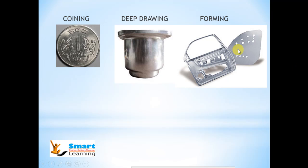And finally, forming. The profile is cut on the punch side and the die side, and metal is flown between the gaps of punch and die.